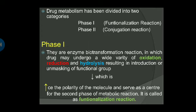We can divide drug metabolism into two categories. One is phase 1 reaction and another one is phase 2 reaction. Phase 1 is also called the functionalization reaction, and phase 2 is called the conjugation reaction. Phase 1 contains three types of reactions: oxidation, reduction, and hydrolysis. These three reactions increase the polarity of the molecule and prepare it for secondary metabolic reactions. This is called the functionalization reaction.